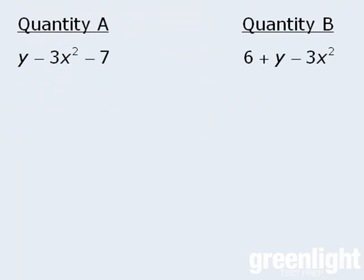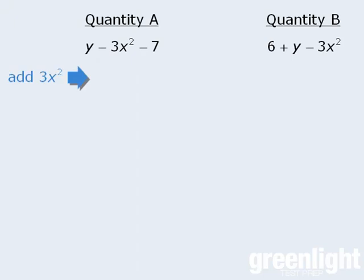In this question, notice that both quantities share some identical terms. They both share a positive y term, and they both share a negative 3x squared term. We can eliminate those terms by performing the same operations on both quantities. To begin, let's add 3x squared to both quantities. When we add 3x squared to quantity A, it cancels out the negative 3x squared term, and it cancels out the negative 3x squared term in quantity B as well.